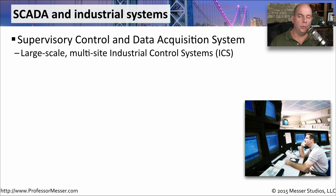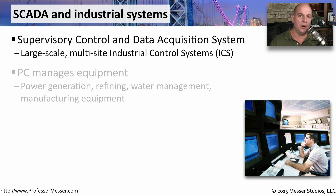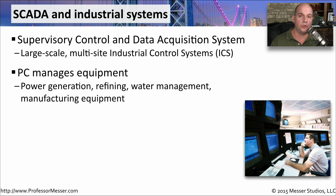In an earlier video, we talked about SCADA networks — the supervisory control and data acquisition system networks. You may also refer to these as industrial control systems, because they are managing and controlling very large pieces of equipment. These are the things that provide power generation, do water management, and may be used on a manufacturing floor. Because of that, it's important that SCADA networks are segmented off to their own part of the network.